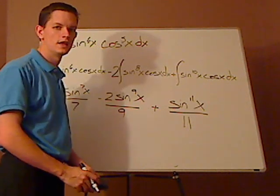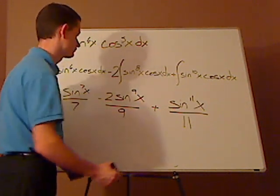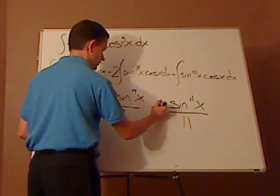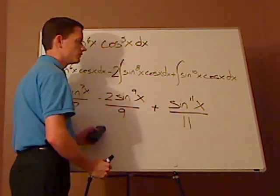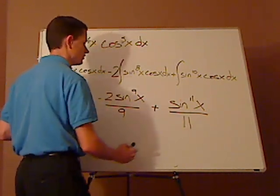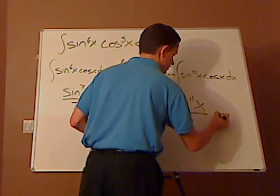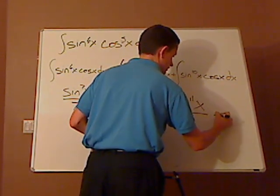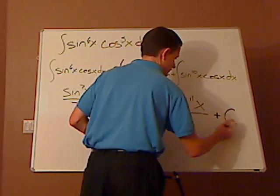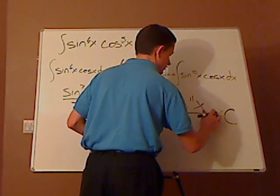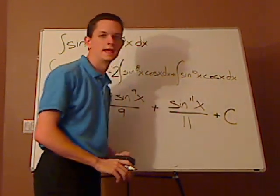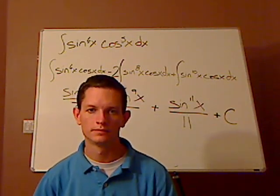Plus sine to the 11th x over 11. Alright, and am I forgetting anything else? Yes, it's an indefinite integral, so when you have an indefinite integral, it's always plus the constant. Alright, that's it. Alright, thank you.